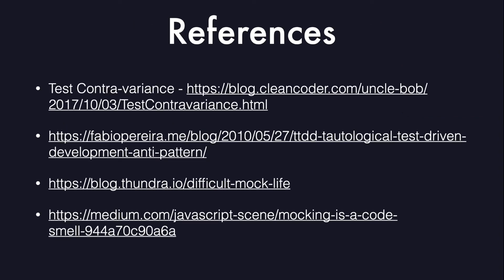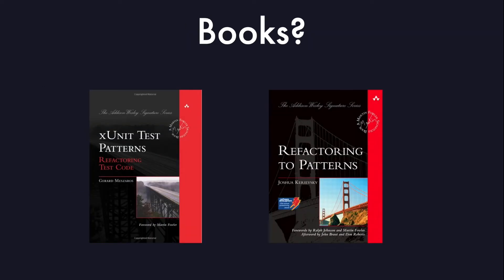When I came across this problem, I started finding other resources related to it. I found many references, especially in the TDD world. I came across the term 'test contravariance', coined by Robert Martin, author of the famous Clean Code book. I've also linked some posts that discuss this idea in detail. Both of these books touch on the subject of tightly coupled unit tests and have a wealth of information related to refactoring and unit testing.